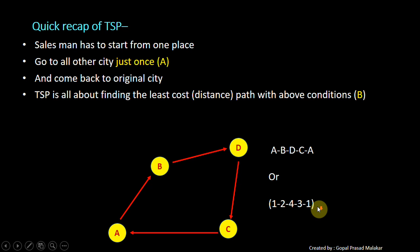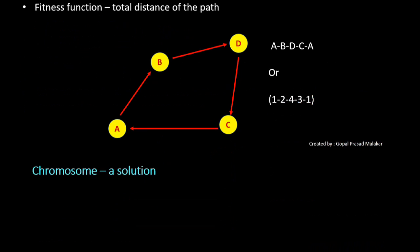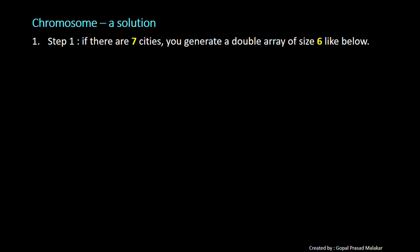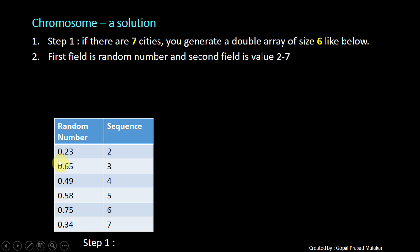How do you generate it for travelling salesman problem? It is all about finding the least cost method. That's what is the fitness function. So what you do, if you have 7 cities, you create a double array of size 6. First field is random number and second field is value 2 to 7. You have random numbers and here you have 2 to 7 in sequence. Now what you do, you sort this by random number.